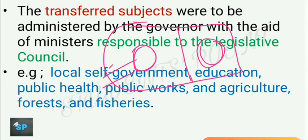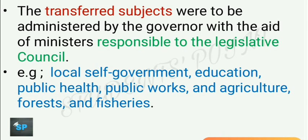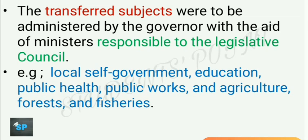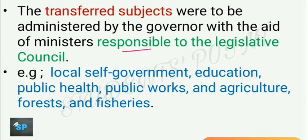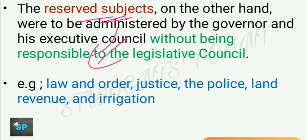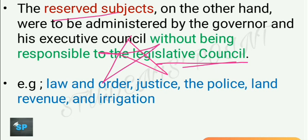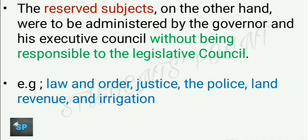The transferred subjects were those administered by the Governor with the aid of ministers who were responsible to the legislative councils, and these subjects were given to Indian members. They included local self-government, education, public health, public works, agriculture, forests, and fisheries. The reserved subjects were retained by official British members, who were not responsible to the legislative councils at all. Reserved subjects included law and order, justice, police, land revenue, and irrigation. So agriculture was given to Indian members but irrigation was kept with British members — making it difficult for Indians to deliver results.